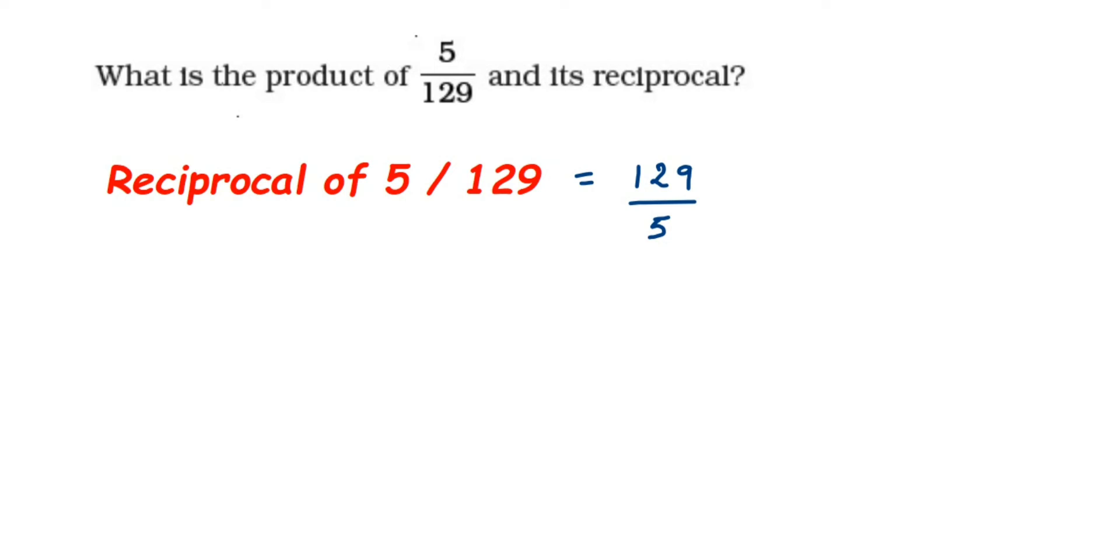Now we have the number 5/129 and we got the reciprocal. We have to find their product. So it is 5/129, the actual number, times its reciprocal 129/5. You can see that 5 cancels with 5.